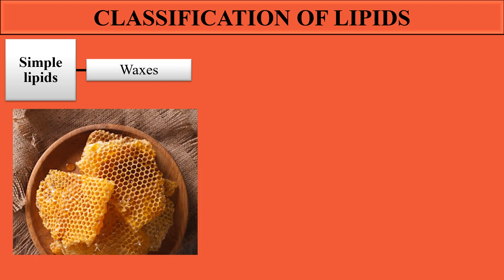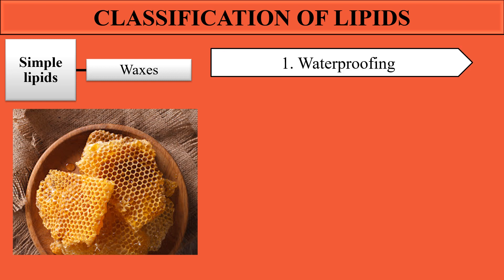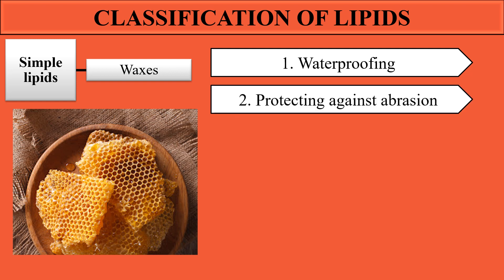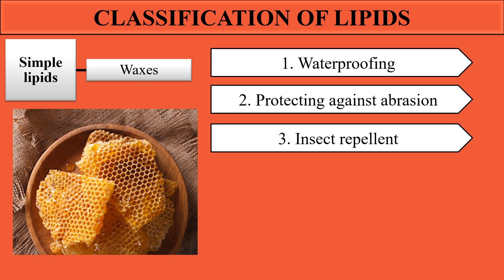What are the functions of waxes? Examples of waxes naturally present in our environment include beeswax. Different forms of waxes provide waterproofing — they are present on plants and protect the leaves from damage or loss of water into the environment. They also protect plants against abrasions, protecting leaves and outer structures from damage.